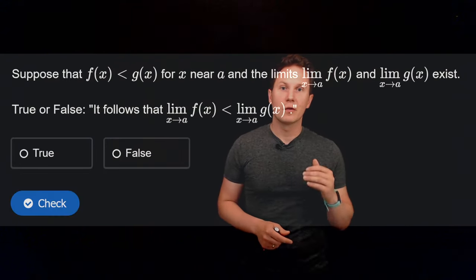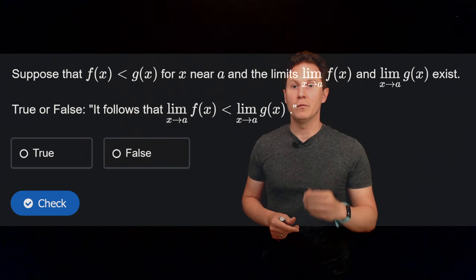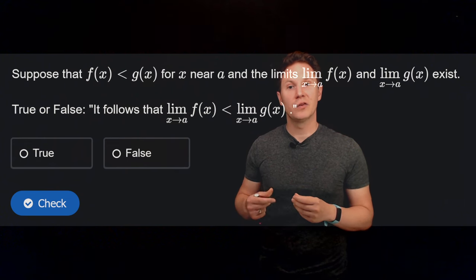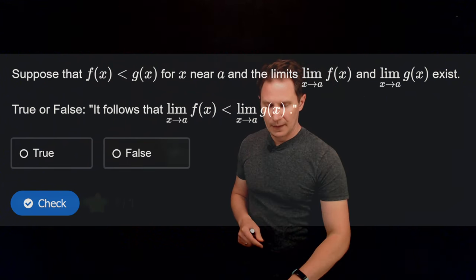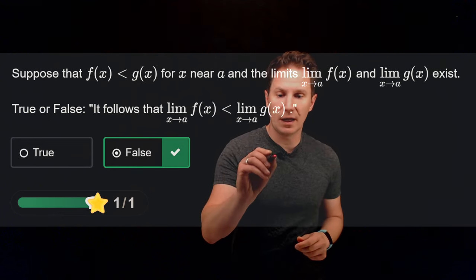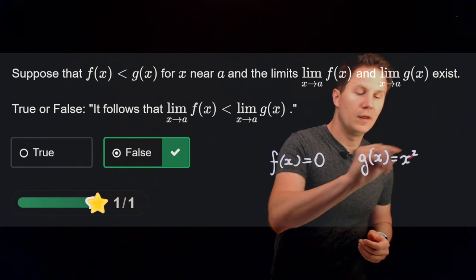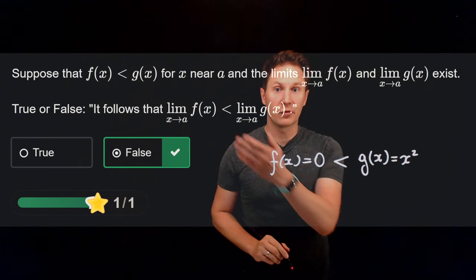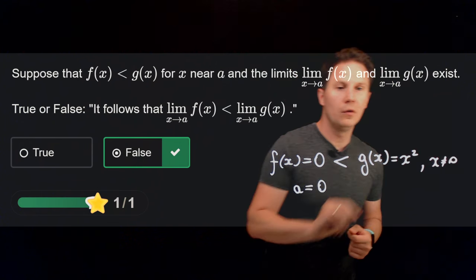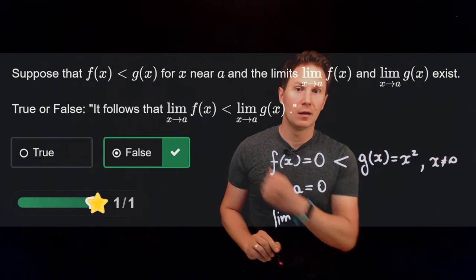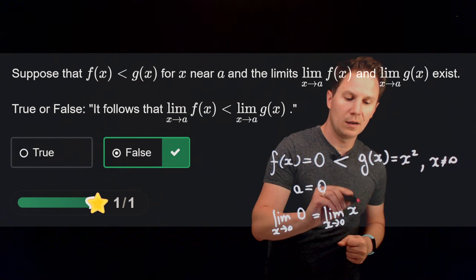Suppose that f(x) is strictly less than g(x) for x near a and their respective limits exist. Is it true or false that these respective limits are related in the same way — namely, the limit of f(x) is strictly less than the limit of g(x)? This is a false implication. As a counterexample: if f(x) is the constant function 0 for all x, and g(x) is x squared, then for all x not equal to 0, g(x) is strictly greater than f(x). If we pick a to be 0, the respective limits are both 0 — equal rather than unequal.